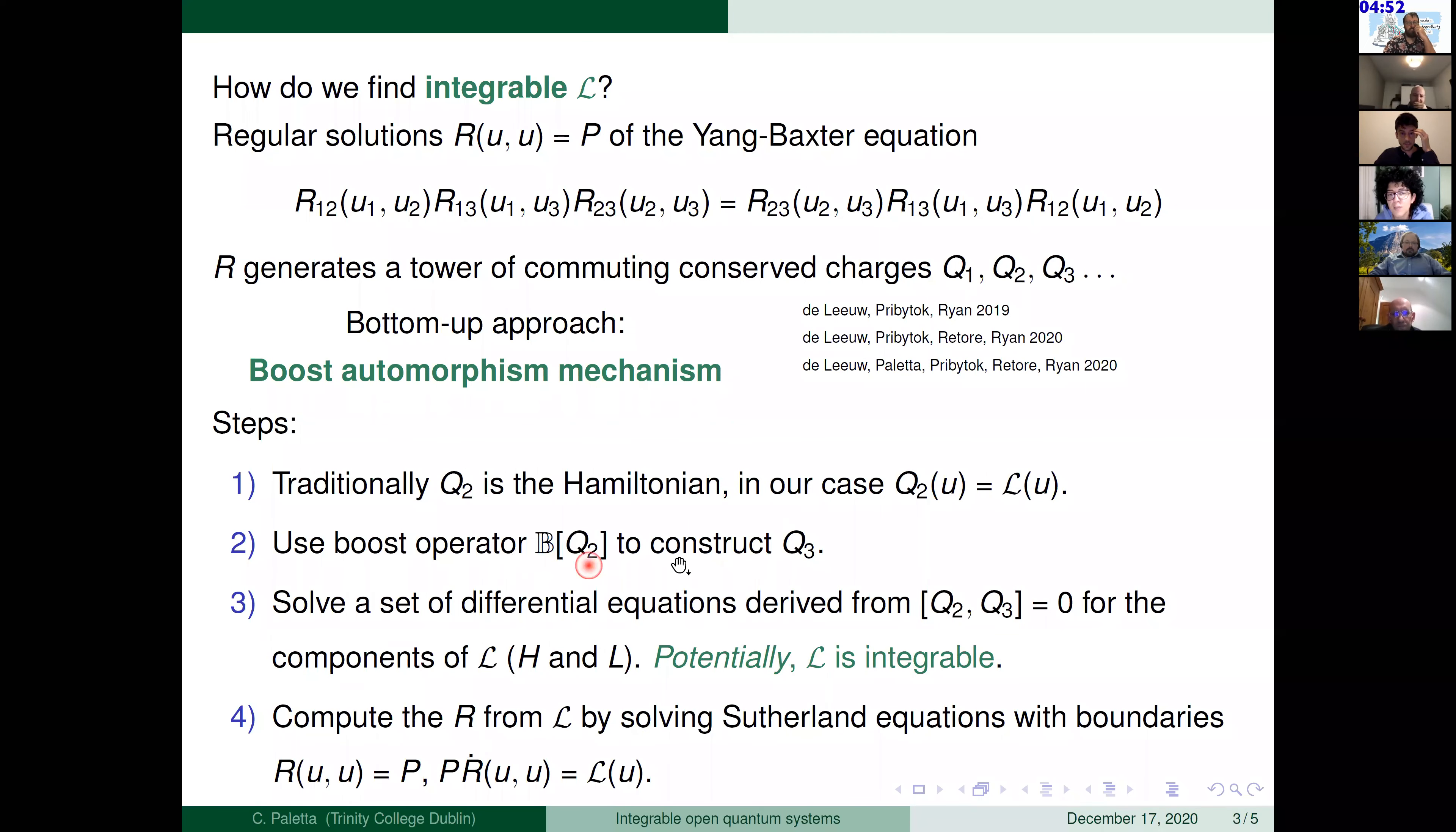Now we use the boost operator to construct the next conservative charge Q₃. We impose that Q₂ and Q₃ commute and so we get a set of non-linear differential equations for the components of the super operator and in particular for the components of H and L. And solving this set of differential equations, we found a super operator that in principle is integrable. I'm saying in principle because to be sure, we should evaluate also the next conservative charges to commute. But since this will be very hard to do, we computed the R using the Sutherland equation and imposing the following boundaries.